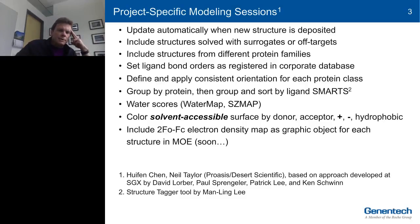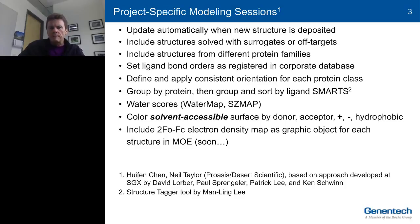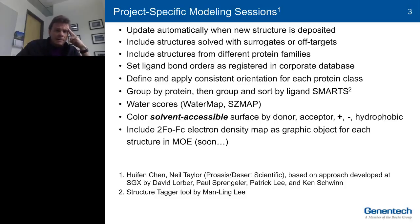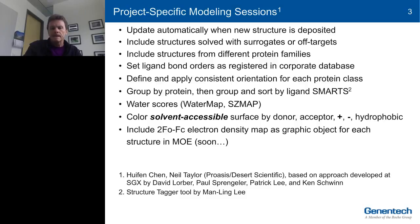In the last couple of years, we became interested in new tools for trying to assess water thermodynamic accessibility, such as Schrödinger's WaterMap, OpenEye's SZMAP, and a tool called Proasis from Desert Scientific. We also annotate all these structures with color-coded solvent accessible surfaces. And something we recently got in place for all of our project teams is making it easy for non-crystallographers to view electron density maps in that modeling session.